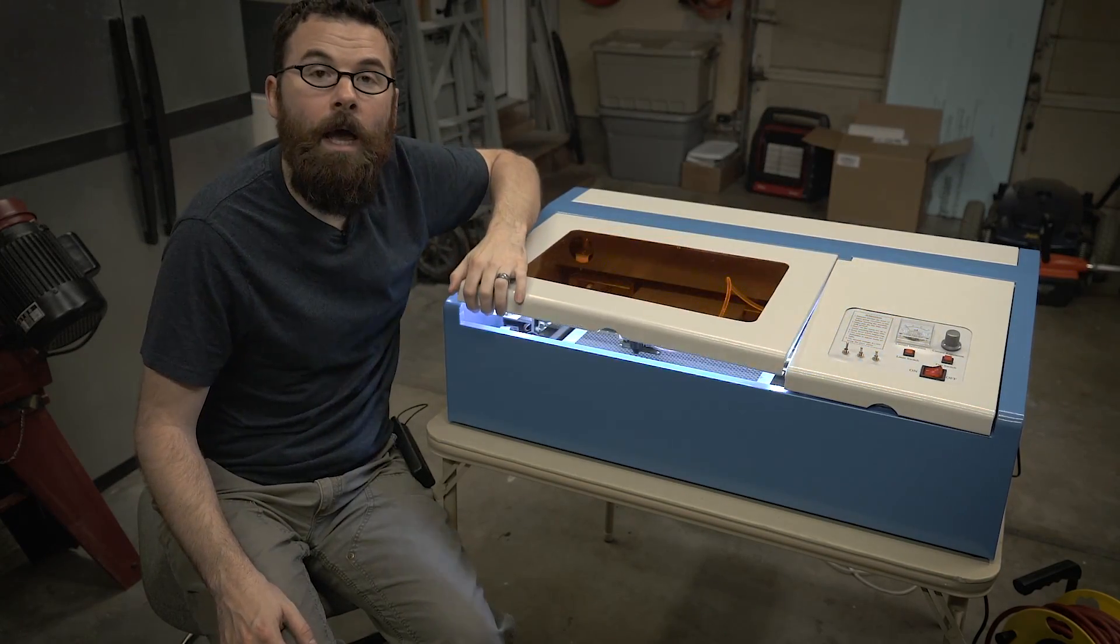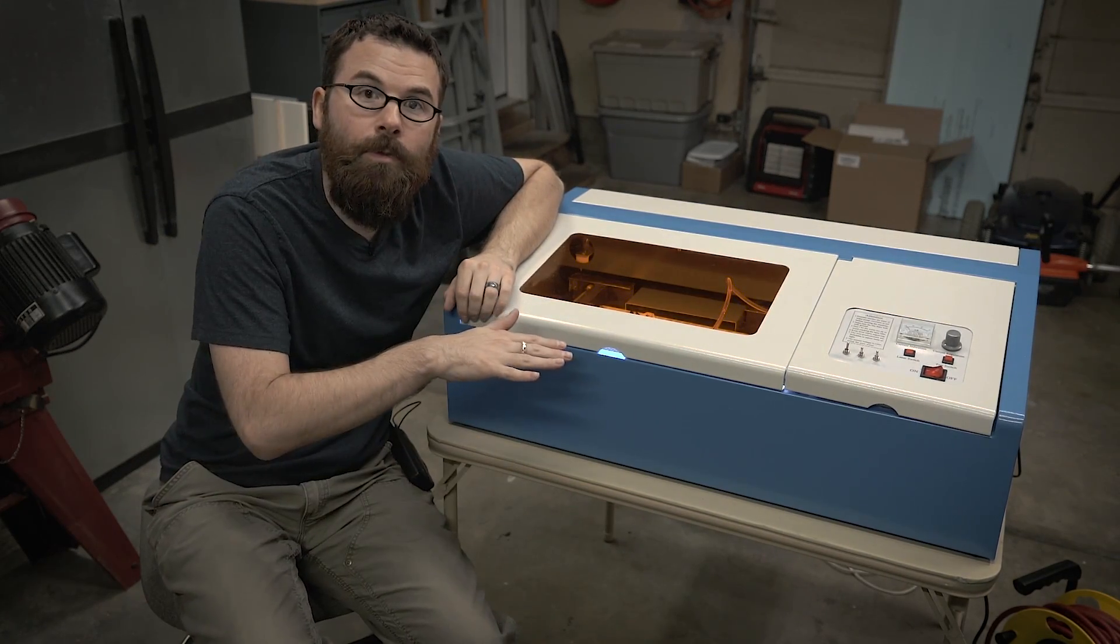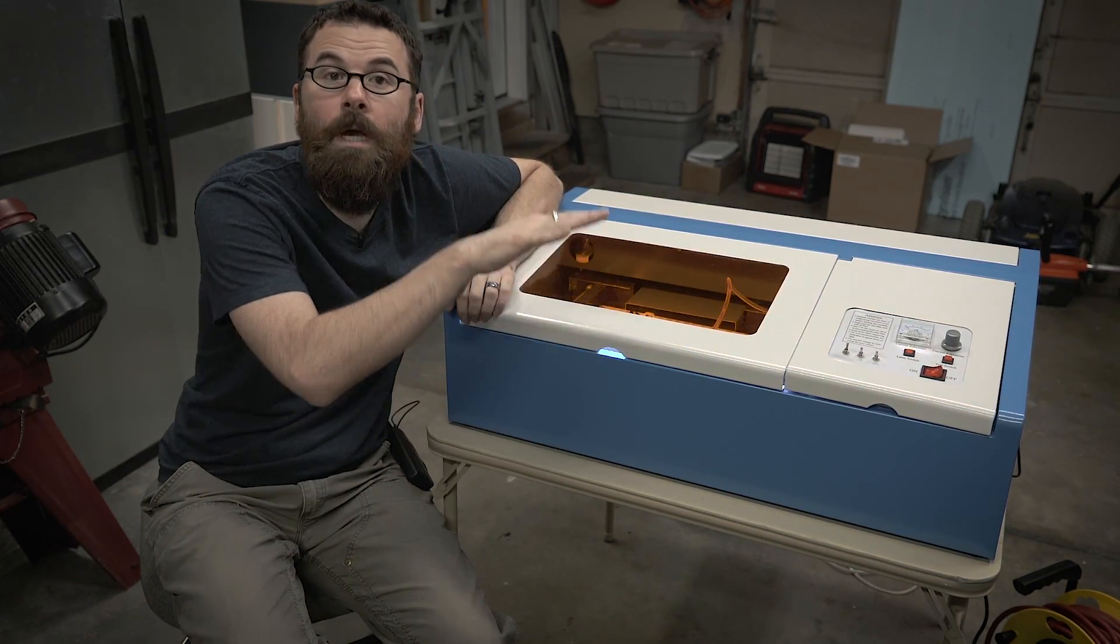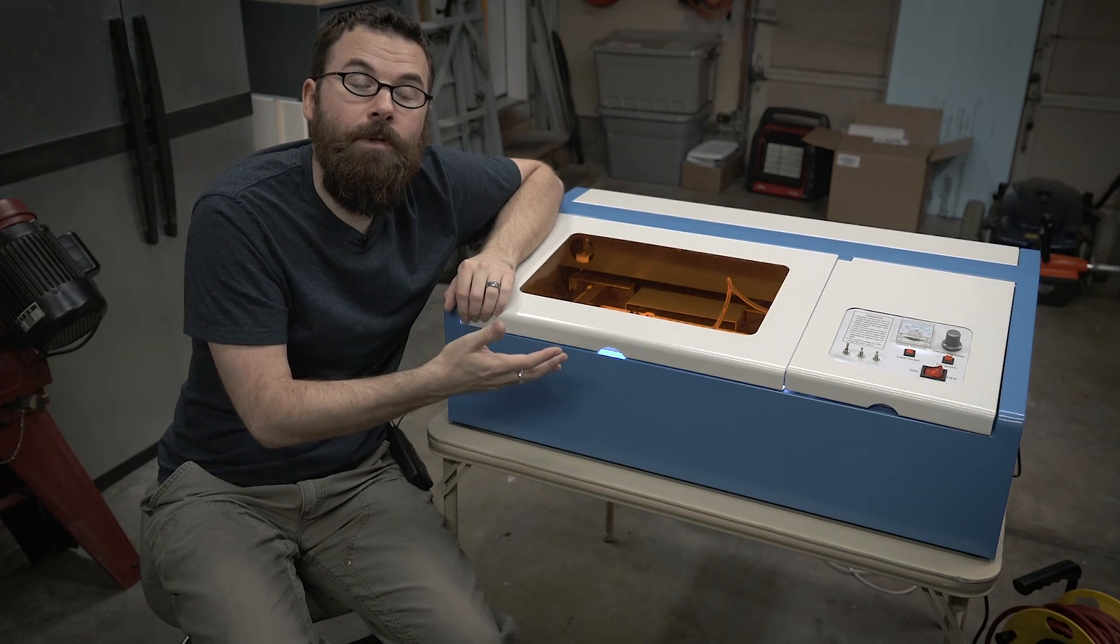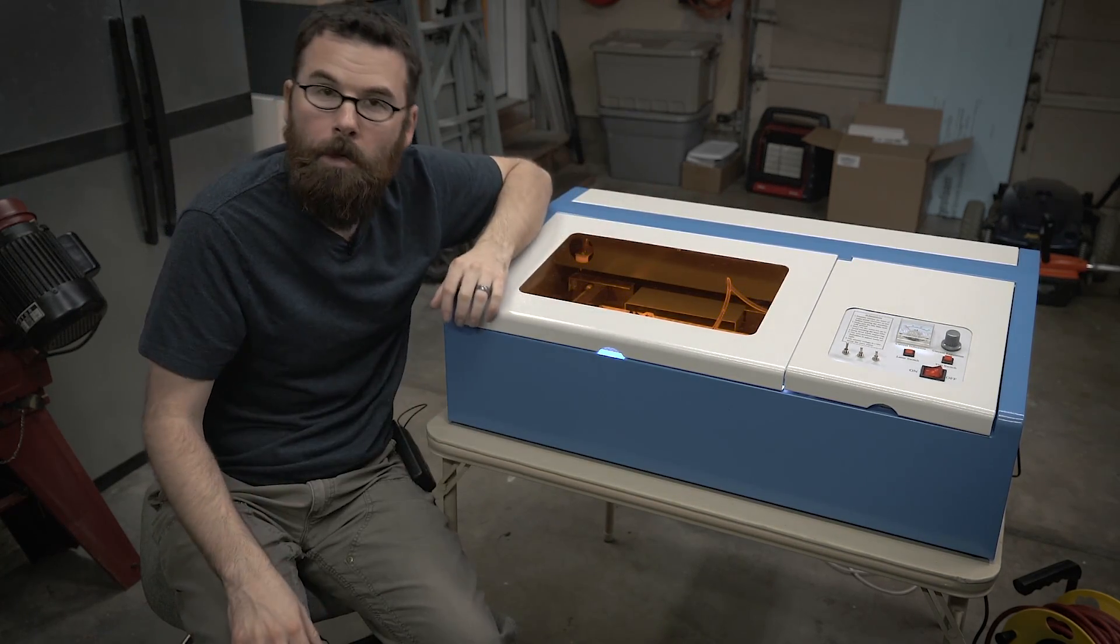This particular machine does not have a Z axis. However, some of these machines do. The Z axis would be used to move the workpiece up and down, and the reason for doing that is to get the focus of the laser in the right spot for maximum cutting power.